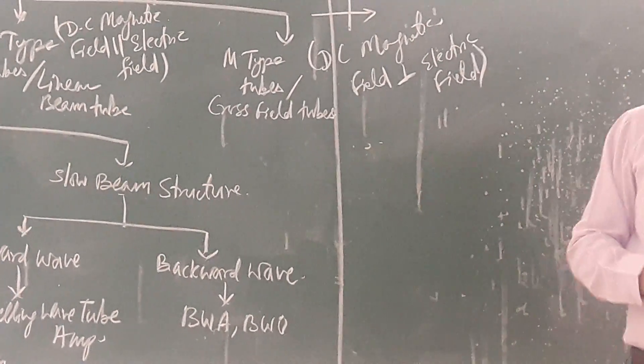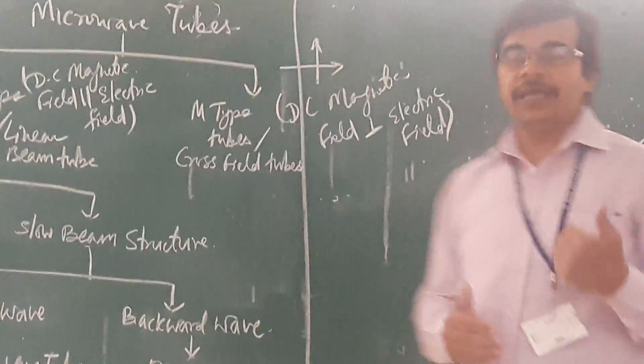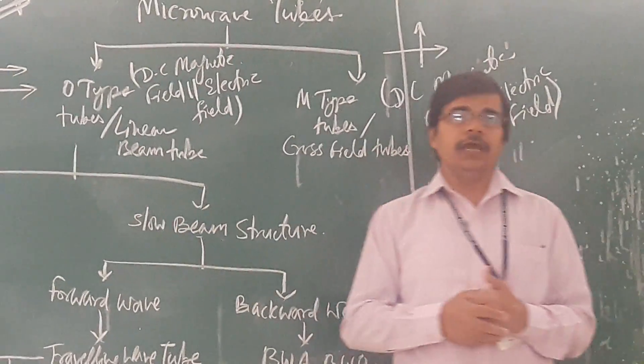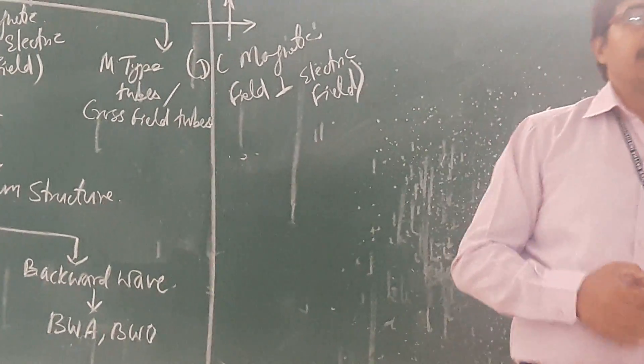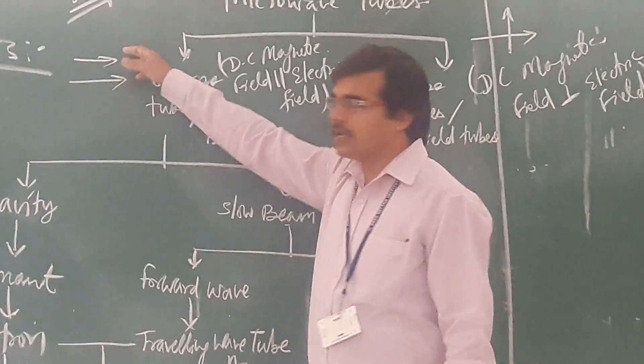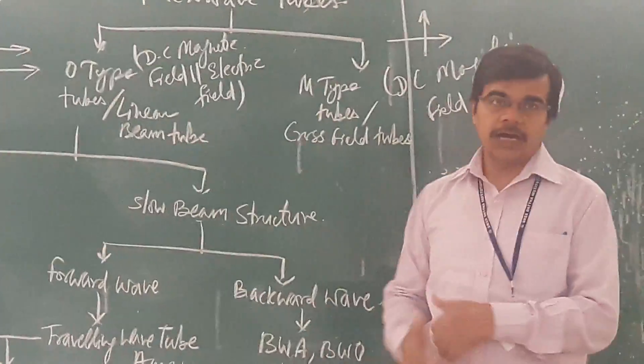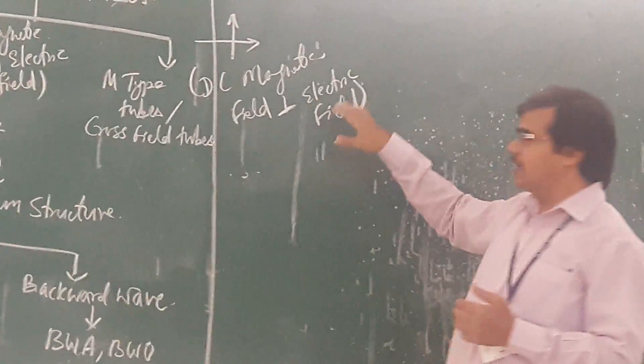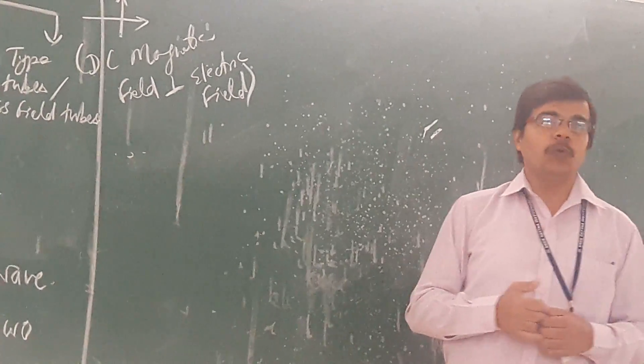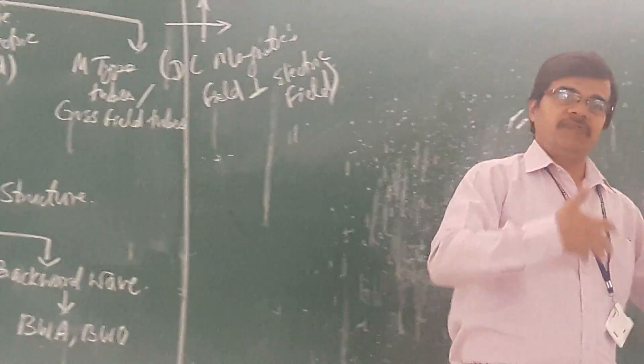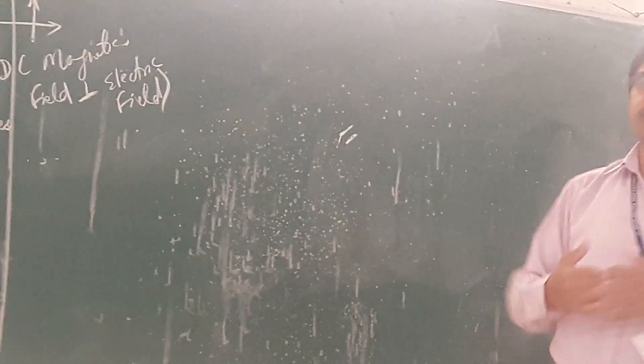This linear beam, why we are putting it? Because here what is happening that the electric field and the magnetic field, they are parallel to one another. So, as electric field and magnetic field are parallel, they are treated as linear beam. On the other hand, in case of your M type tube, your electric field and magnetic field, they are perpendicular to one another. As they are perpendicular, they are also treated as cross field tube.